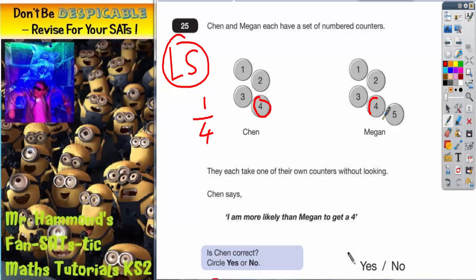For Megan, there's the 4, but she's got 5 counters. So, she's got a 1 out of 5 chance.